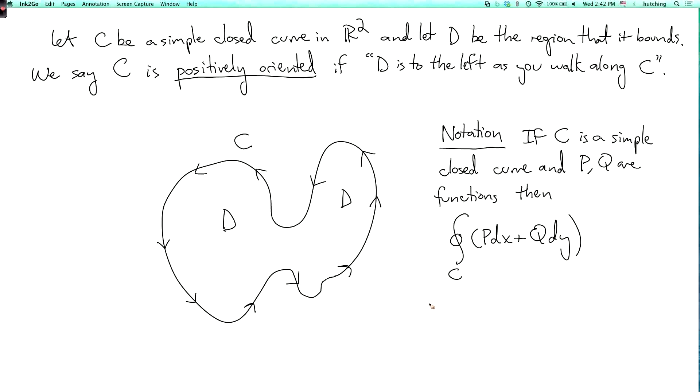And what this means is the line integral over C of P dx plus Q dy, where C has the positive orientation. So C is positively oriented. You can use this notation if you don't want to have to keep saying that you're using the positive orientation of C.